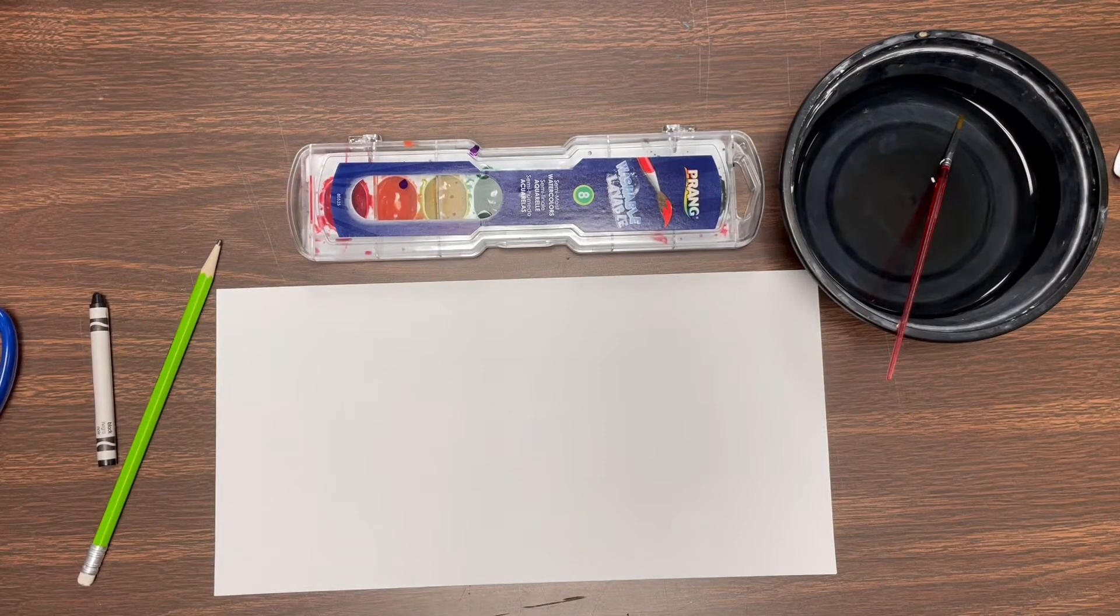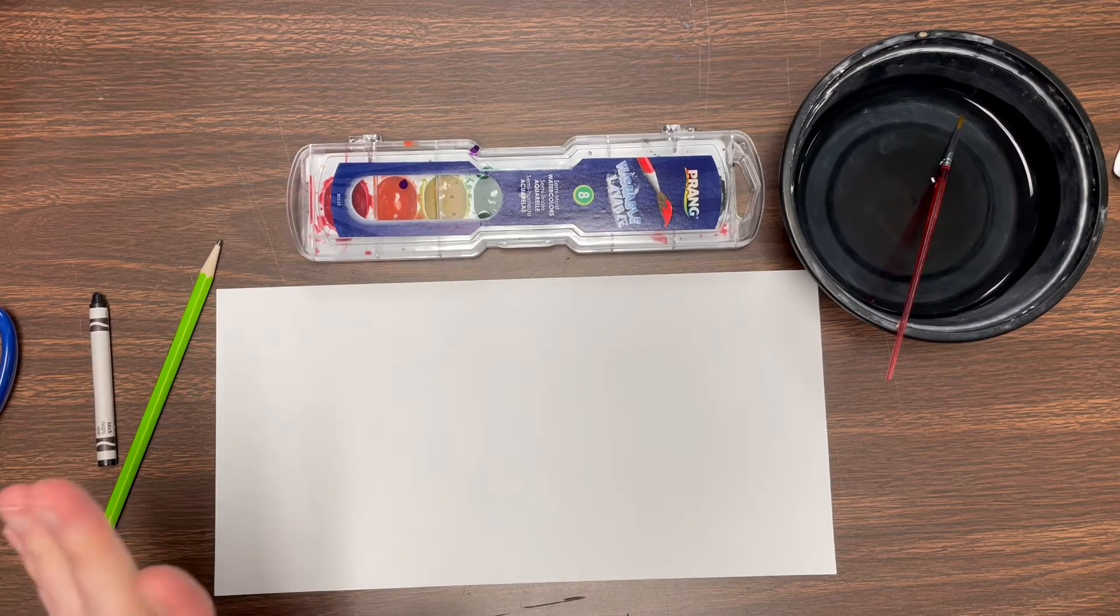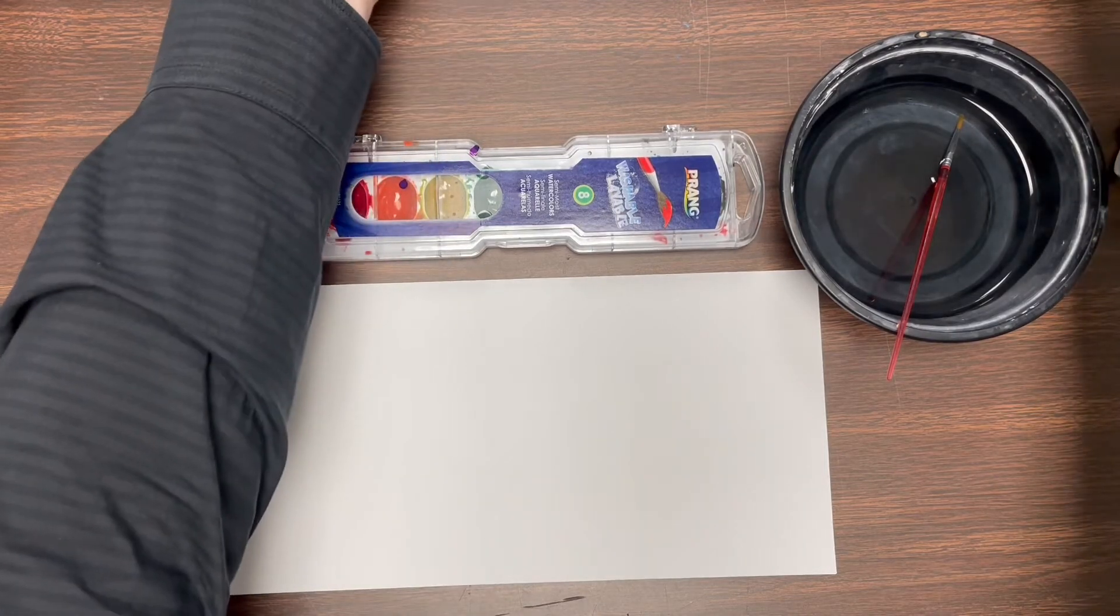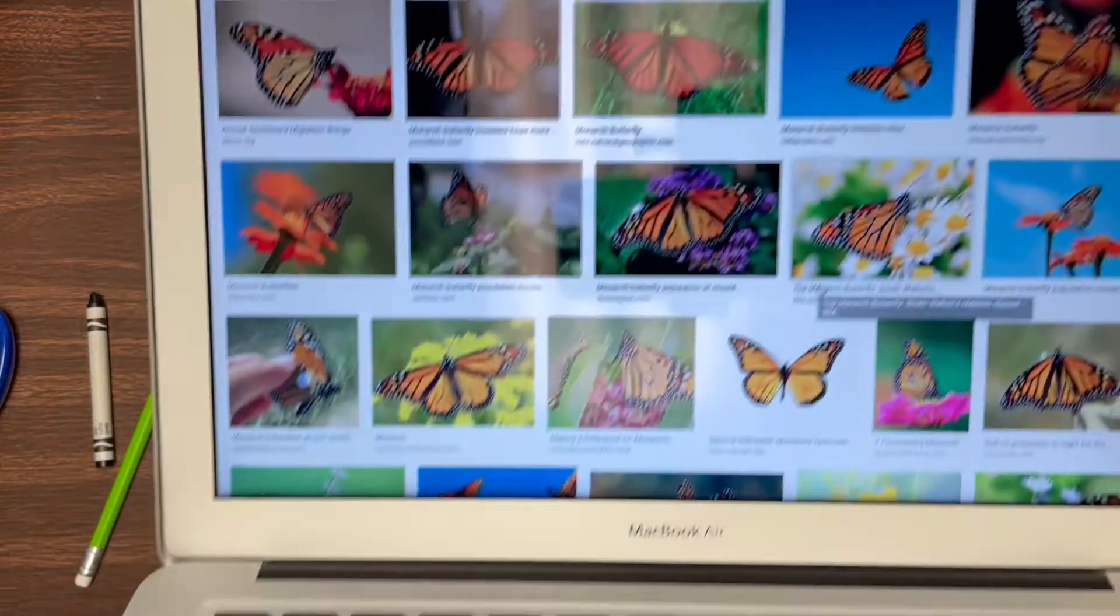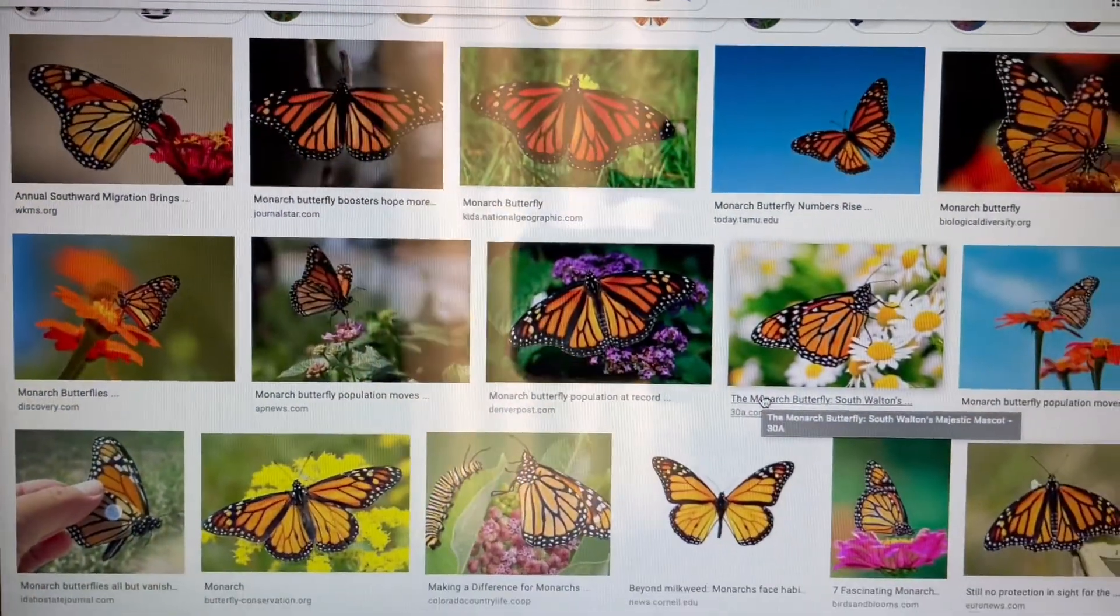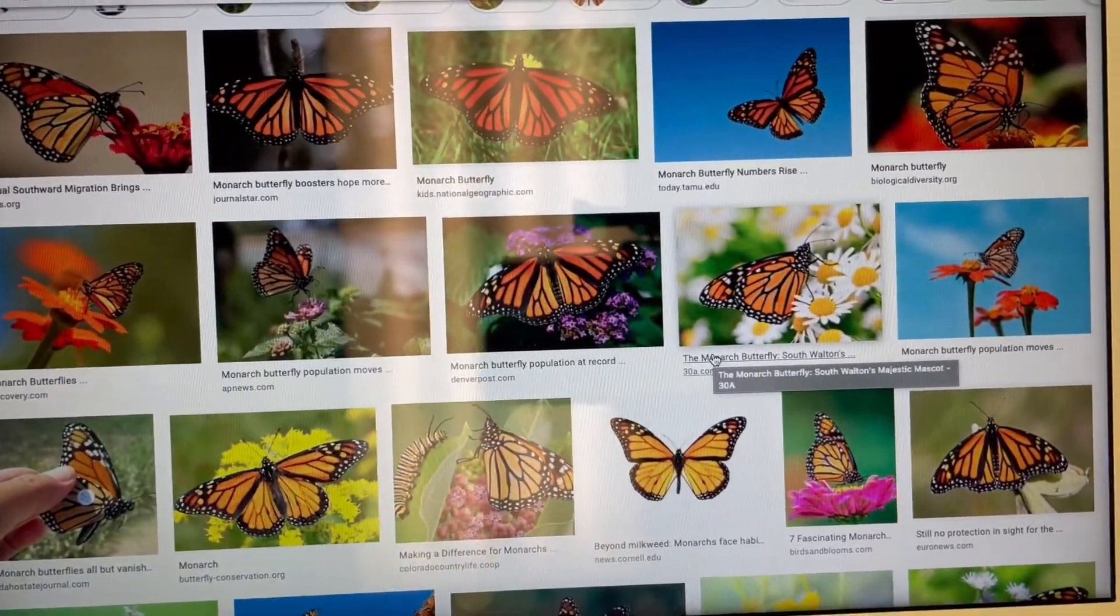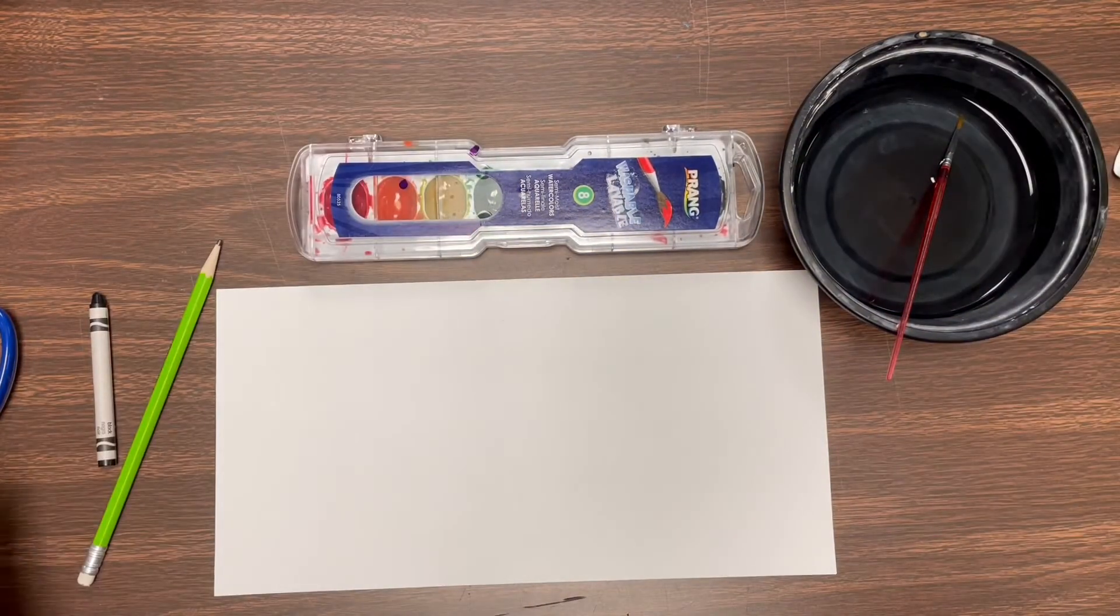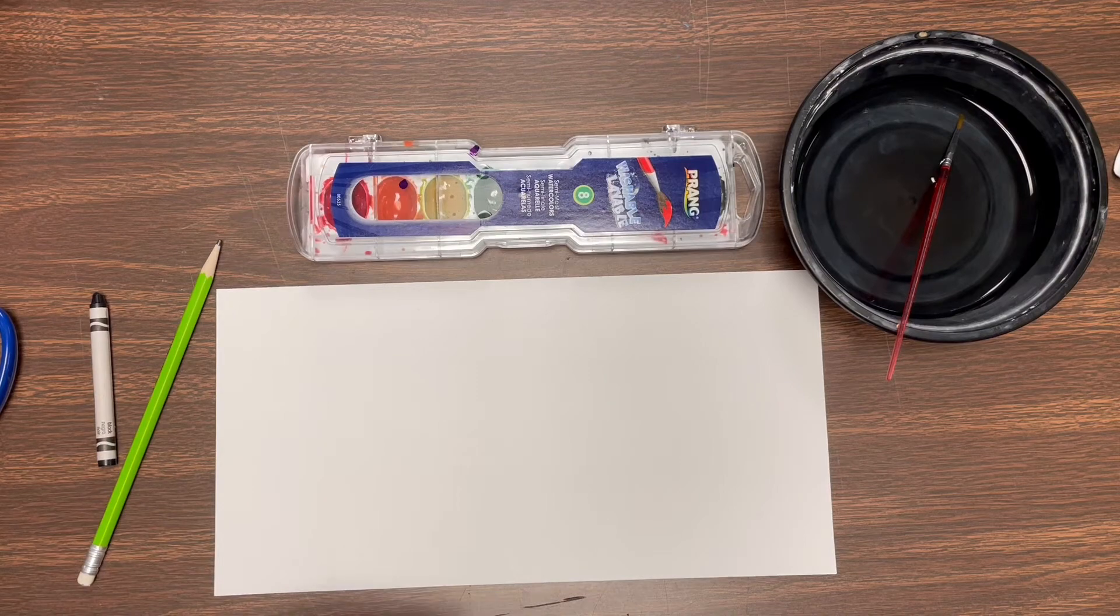Today we're gonna be drawing a symmetrical butterfly. I am going to be making a monarch butterfly. If you see from these pictures, these are the butterflies that we usually see around here in Texas. They're pretty common. I saw one flying around my yard yesterday actually.